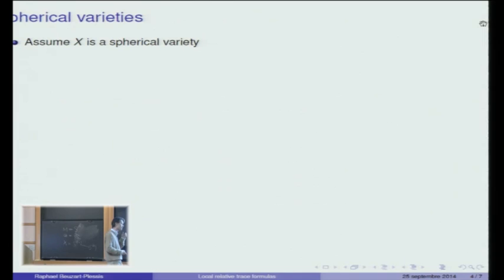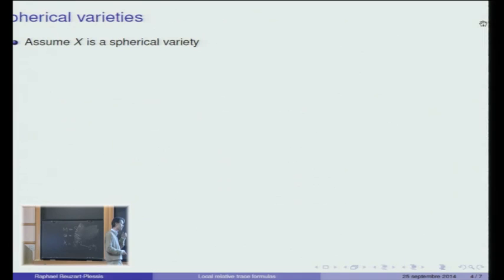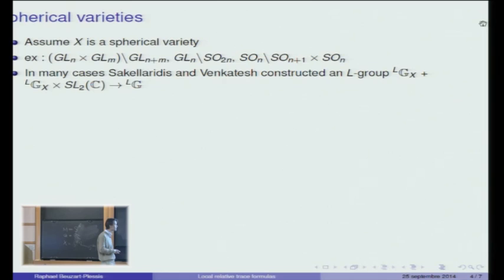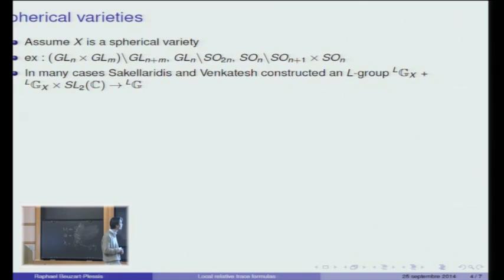I will now assume that X is spherical — a spherical variety. I won't give the full definition, but it means something like X is not too big. Here are a few examples of spherical varieties: for example, you may take H to be GLN times GLM and the group G to be GL(N+M). Starting from such a spherical variety, Sakellaridis and Venkatesh were able to construct, in many cases, a dual group associated to this spherical variety, denoted L bold G_X, together with a homomorphism from the product of the dual group of X with SL2(C) to the dual group of G.